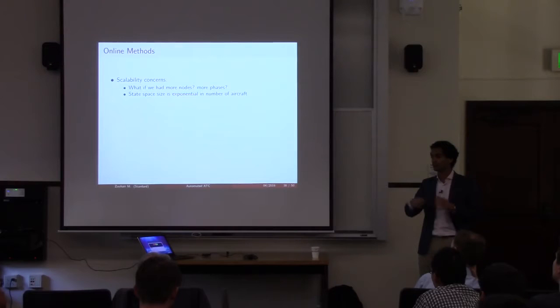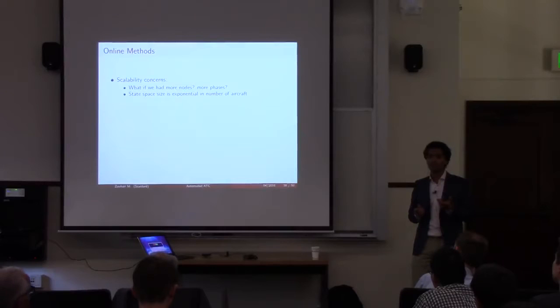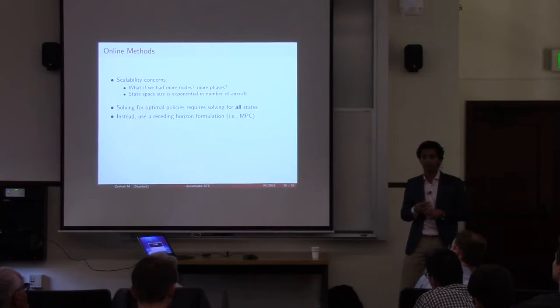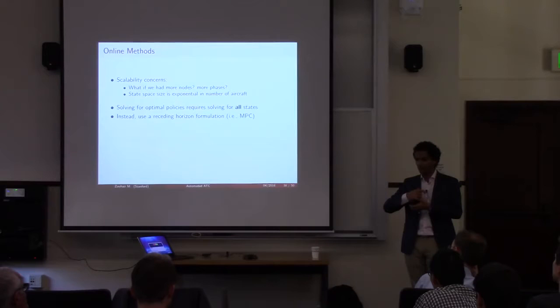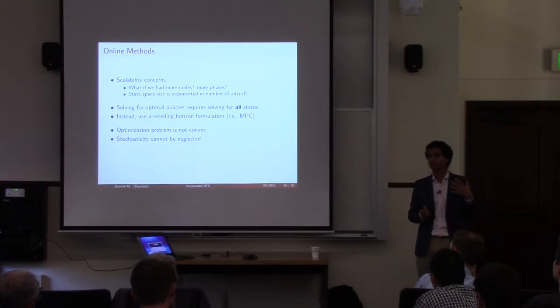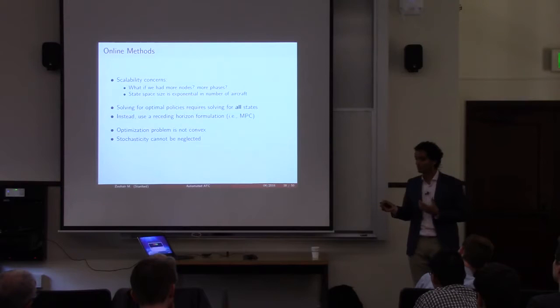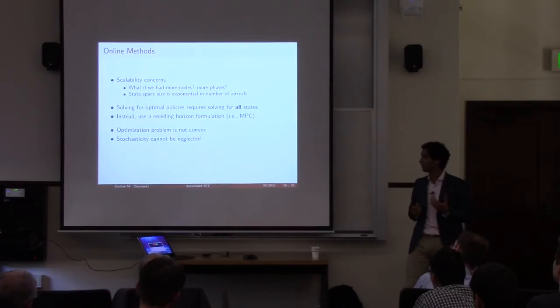Rather than solving for optimal policies in all possible states, we want to focus on policies from the current state. MPC has been successful because problems can often be convexified, but in our case it doesn't quite work — the optimization turns out to be a mixed integer linear program, and there's significant stochasticity that cannot be neglected. So we turned to Monte Carlo Tree Search. MCTS came to fame a few years ago in Go, and just recently an AI beat the world champion in Go. While much hype focuses on the neural networks, the other key ingredient is the tree search.